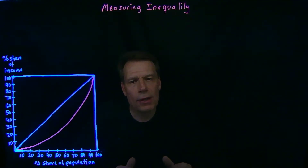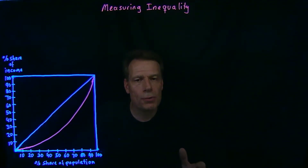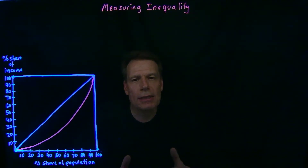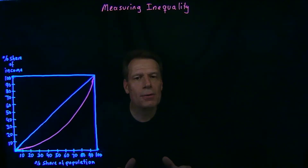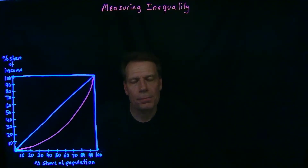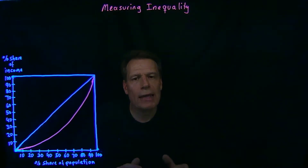When we get together in class, we're going to try to think of some policies that both those who follow the Nozick approach and those that follow the Rawlsian approach might actually agree on, and then we'll think of some policies that they might disagree on. So before we get to class, I'd like you to think about that. But before we get there, I'd like to think a little bit about how we actually measure inequality in the real world.